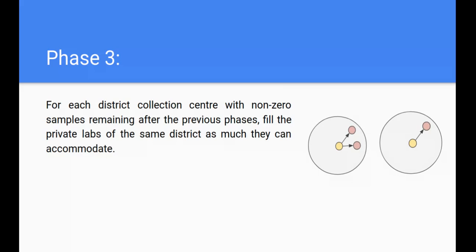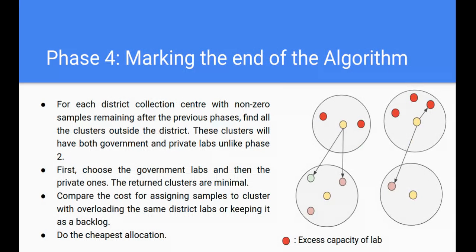In phase three, we have those districts with samples that cannot be accommodated in their own private labs. In phase two we handled all districts where remaining samples were less than their private lab capacity — those districts are either allocated to private labs or to outside clusters and they don't reach phase three. So in phase three we only deal with districts whose samples exceed their own private lab capacity, and the rule is simple: allocate as many samples as possible to those private labs.